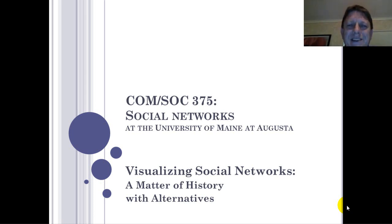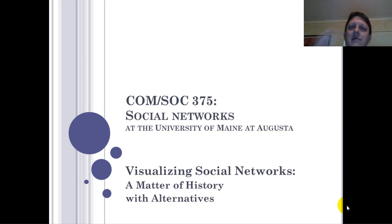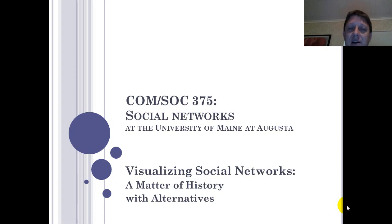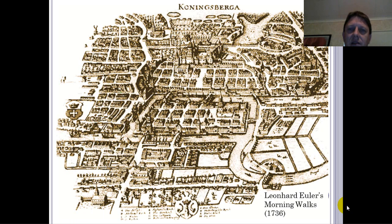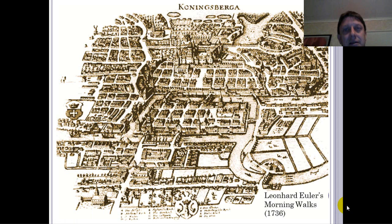Where did social networks come from, both as an idea in mathematics and as a visualization? This is what we're going to be considering in the last portion of our introductory lecture for CommSocial 375, Social Networks, at the University of Maine at Augusta. I'd like to begin with this image of the city of Königsberg, which was in Prussia and is now called Kaliningrad in the country of Russia.